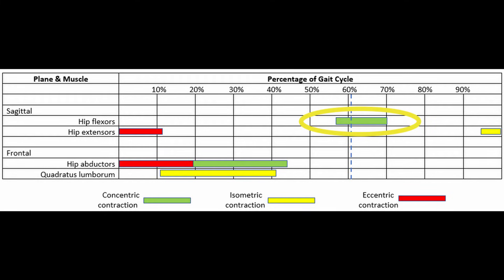Our hip flexor muscles are more active at the end of stance and beginning of swing. They contract concentrically to provide an impulse to pull the leg forward during swing. After that impulse, the muscles shut off.